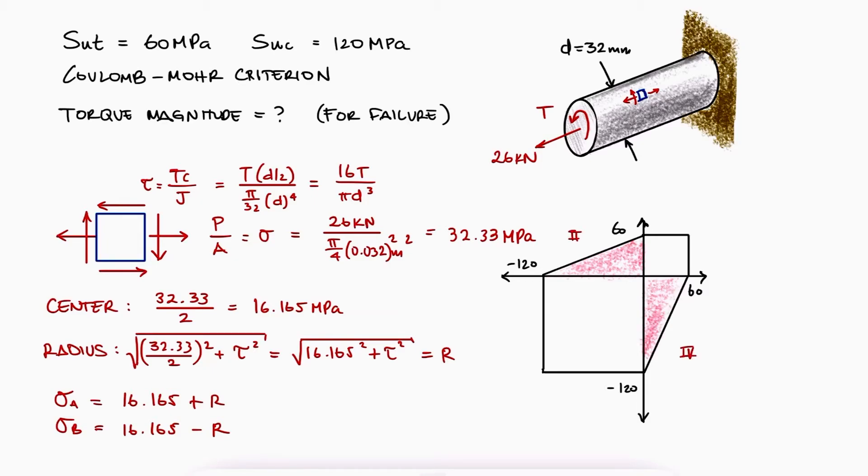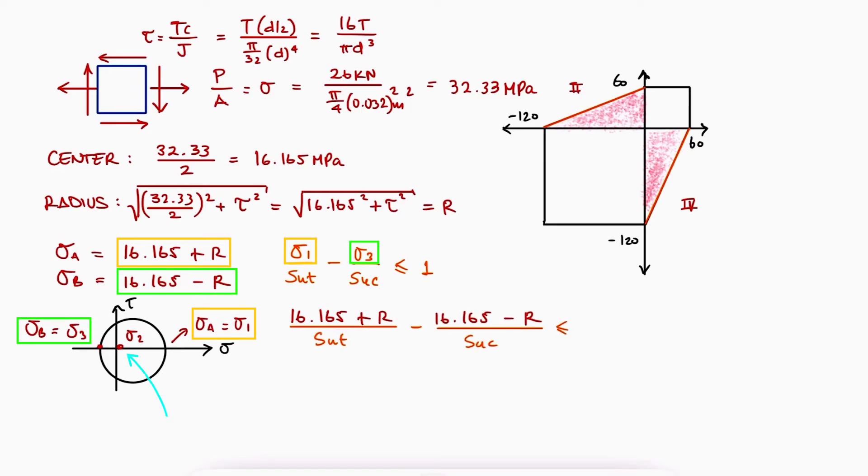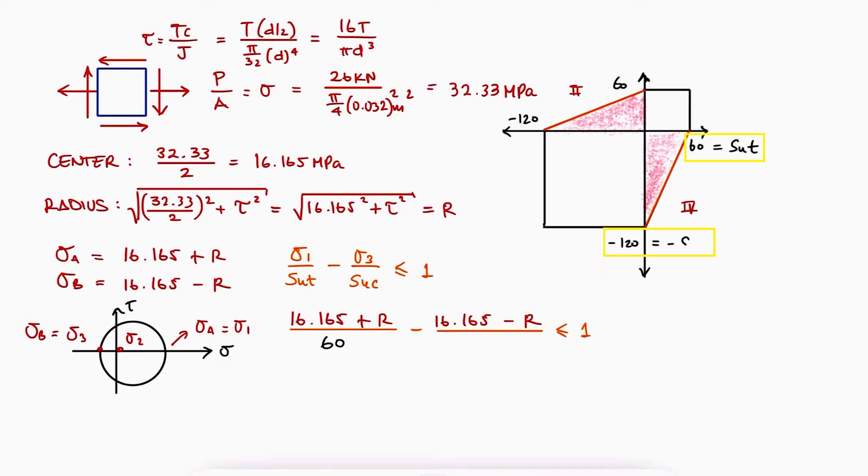This means that we would use the expression for the Coulomb-Moore criterion that we developed during the main video. Substituting the values for σ1 and σ3, which are the same as σa and σb since σ2 is 0, and substituting the material properties, we can solve for the value of the radius and with it for the value of tau.